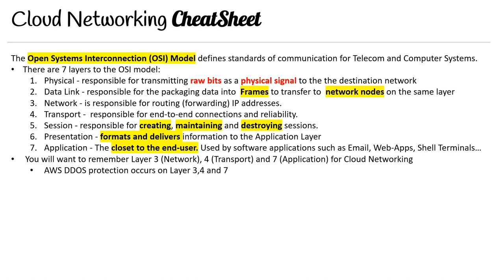If you use AWS DDoS protection, which is called Shield, it operates on layers three, four, and seven. Shield Advanced covers all three of those layers. Basic Shield covers layers three and four, and with Advanced you also get layer seven.